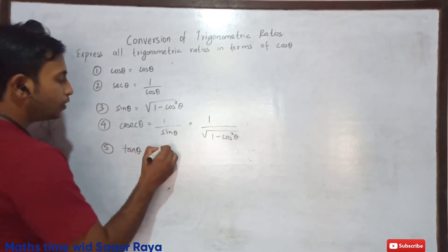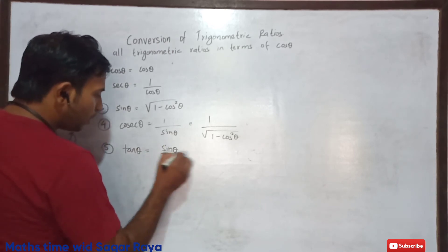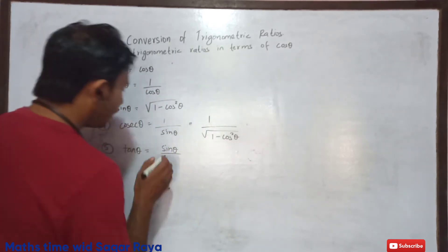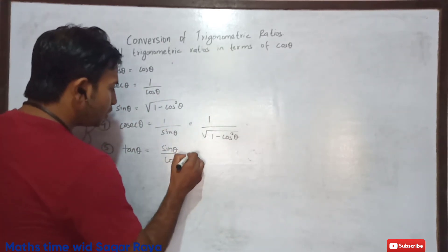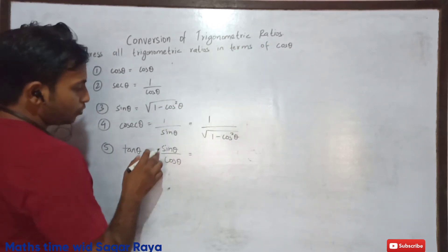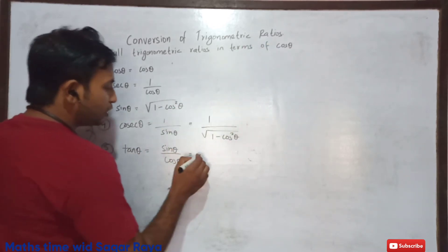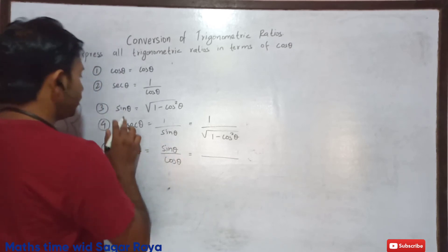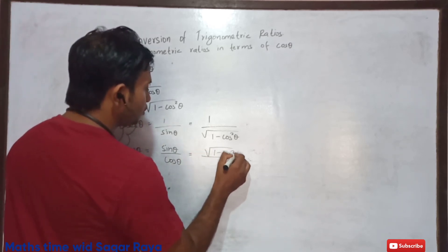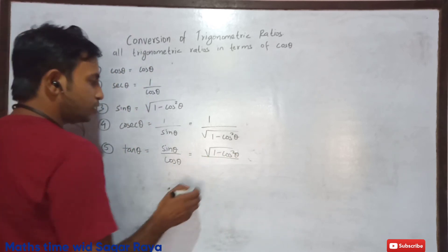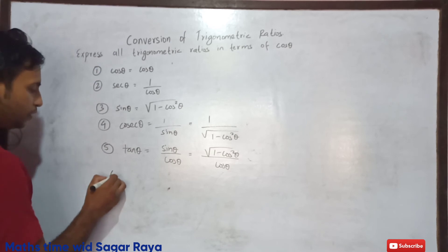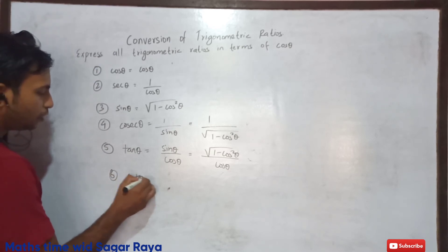The formula for tan theta is sin theta upon cos theta. We have to express it in terms of cos theta, so we change sin theta. Instead of sin theta we may write root under 1 minus cos squared theta, and cos theta we may write as it is. So tan theta equals root under 1 minus cos squared theta divided by cos theta.